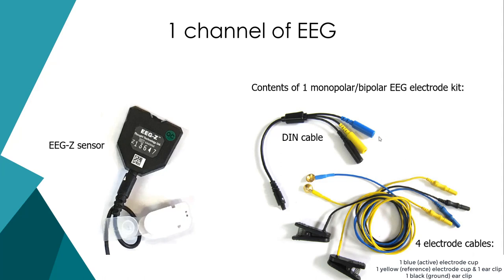The blue plug or blue cable is the active electrode that gets placed on the surface of the head where we want to measure EEG. The yellow reference electrode sometimes goes on the ear and acts as a reference where there's no brain activity, as compared to the blue active electrode where there will be brain activity. The black ground electrode almost always goes on the ear — not the same ear as the reference, usually the opposite side. You want the yellow reference to be on the earlobe closer to the blue active electrode, and the black ground on the earlobe further away.